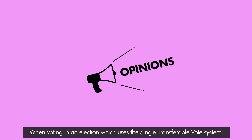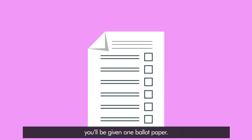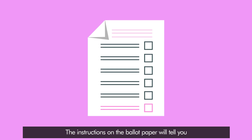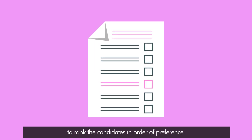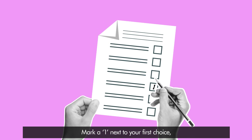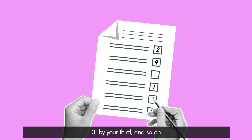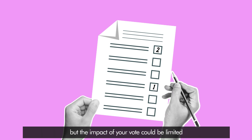When voting in an election which uses a Single Transferable Vote system, you'll be given one ballot paper. The instructions on the ballot paper will tell you to rank the candidates in order of preference. Mark a one next to your first choice, two next to your second, three by your third, and so on. You don't have to put a number next to every candidate, but the impact of your vote could be limited if you only make one or two choices.